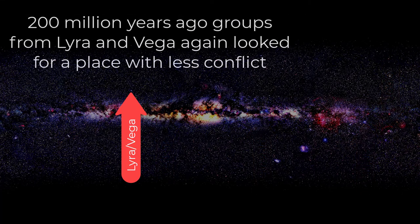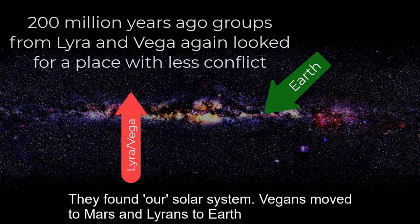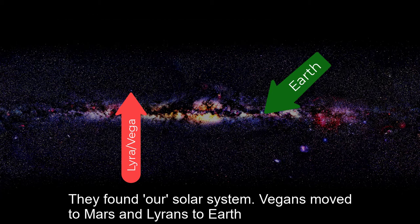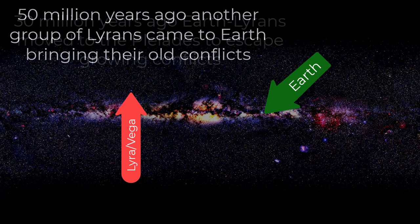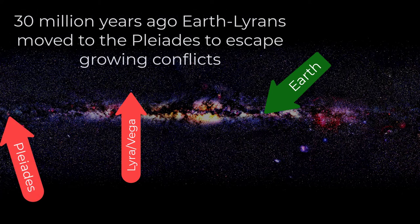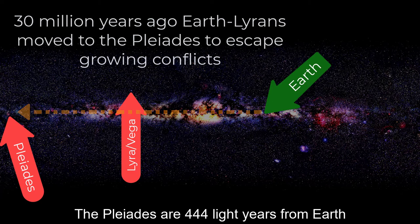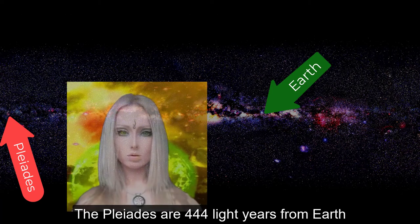200 million years ago, groups from Lyra and Vega again looked for a place with less conflict. They found our solar system. Vegans moved to Mars and Lyrans to Earth. 50 million years ago, another group of Lyrans came to Earth, bringing their old conflicts. 30 million years ago, Earth Lyrans moved to the Pleiades to escape growing conflicts. The Pleiades are 444 light-years from Earth.